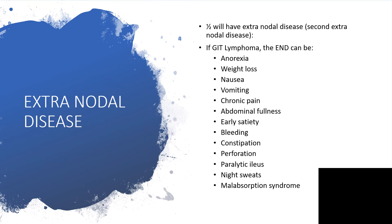About half of patients may have extranodal disease. If the gastrointestinal tract is affected, the individual could develop GI-related signs and symptoms such as anorexia, weight loss — since the cancer is consuming nutrients — nausea and vomiting from chemotherapy or the cancer itself, chronic pain, pressure effects, abdominal fullness, paralytic ileus, distension, and early satiety.